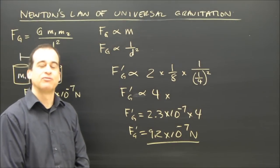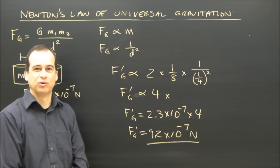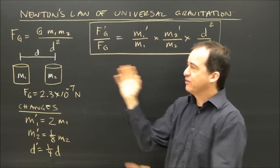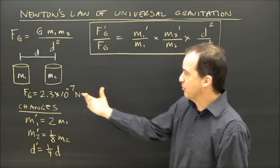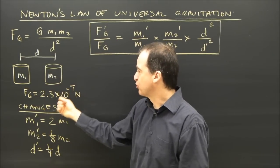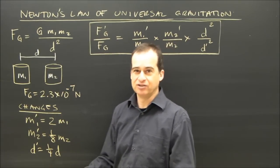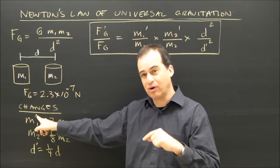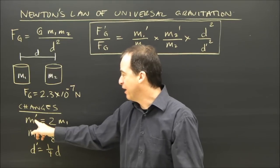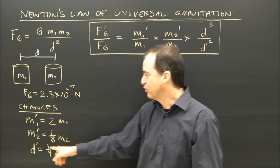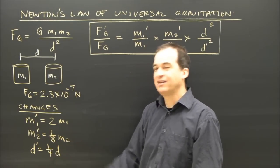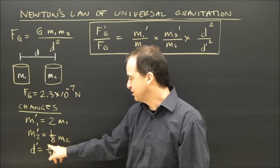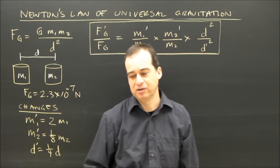Now let's do a method that has a more mathematical proof to show exactly how this works. We're going to do the same problem but in a different way, using a formula that puts this relationship together mathematically. Remember we have two objects with different masses and a certain force of gravity between them, and we've made some changes. The way you write these down is basically how you say it.